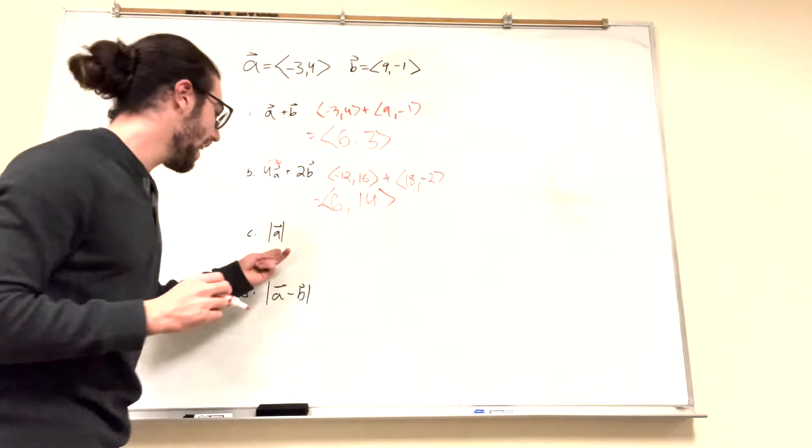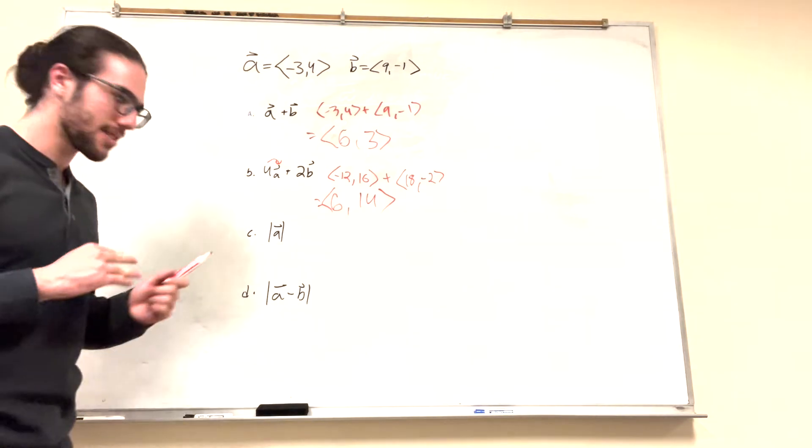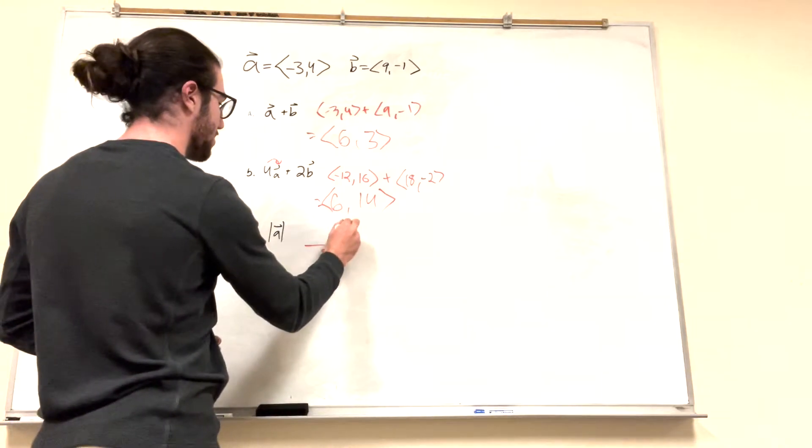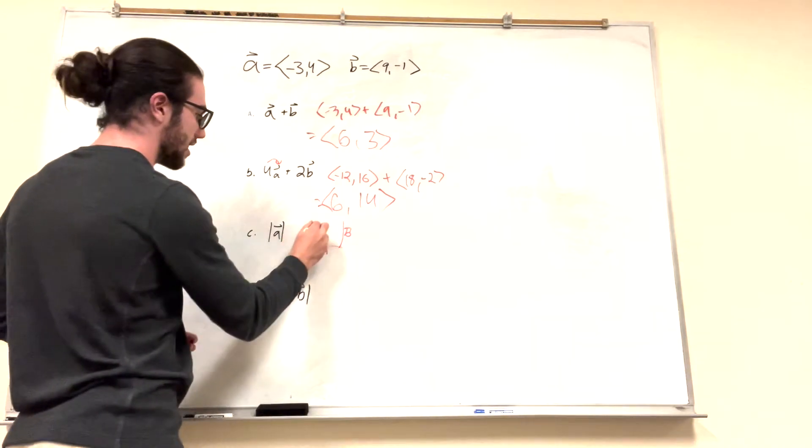All right, so now it says this is a absolute value. But what this tells us is this is the magnitude. So say we have this is a, this is b. It says, what is the length?